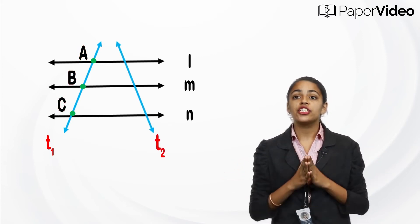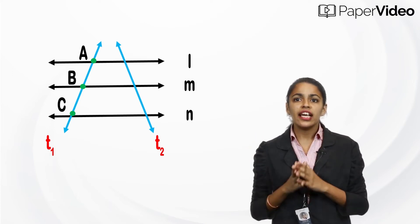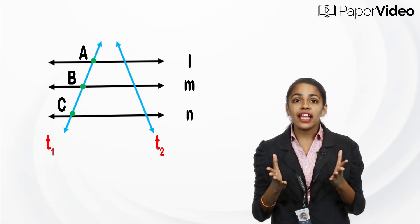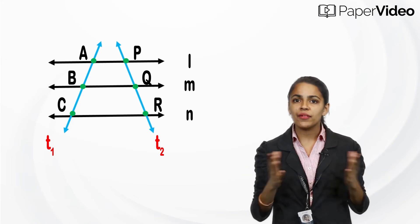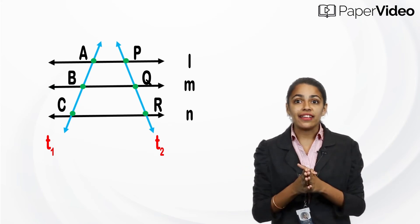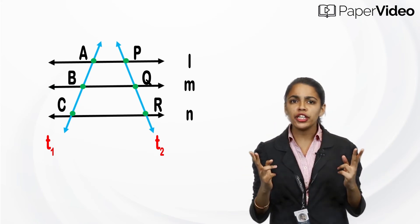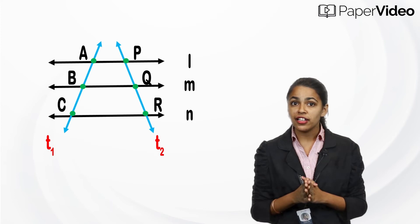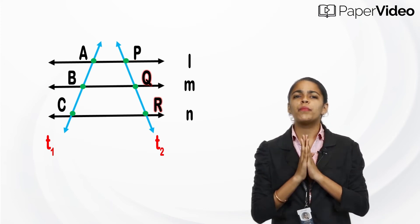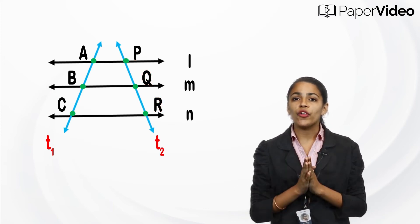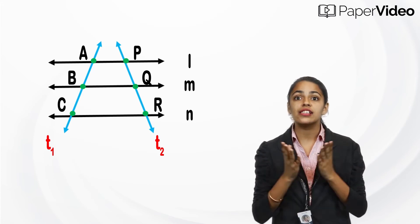Let's draw transversal t2 of these parallel lines, intersecting them at points P, Q, and R. The transversal t2 is making two intercepts here, that is PQ and QR.